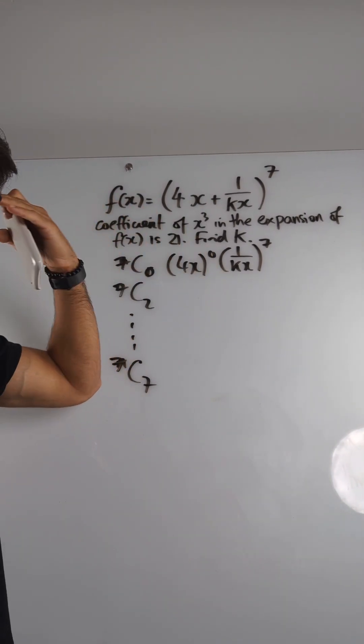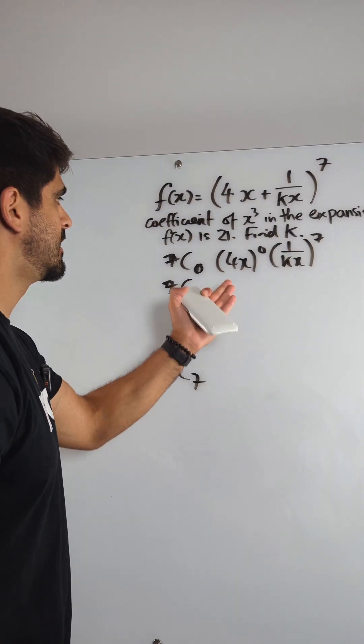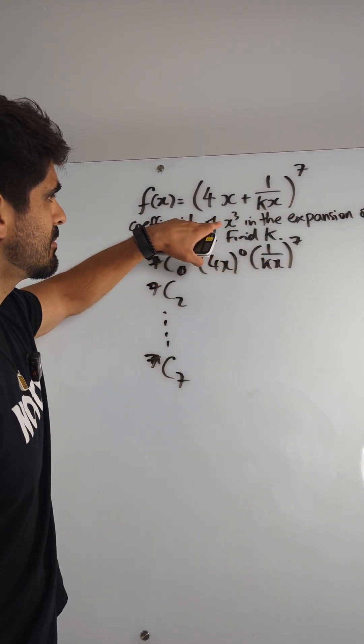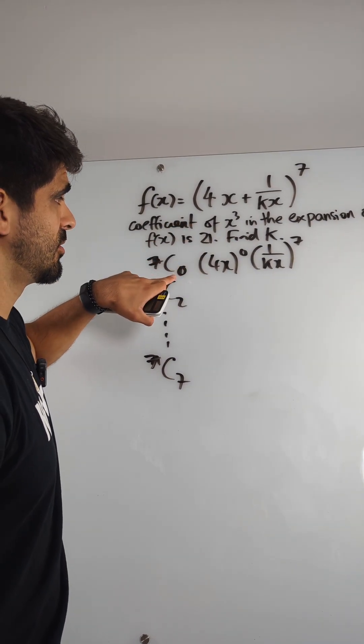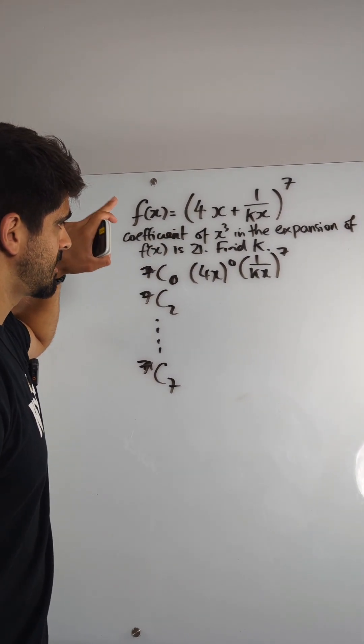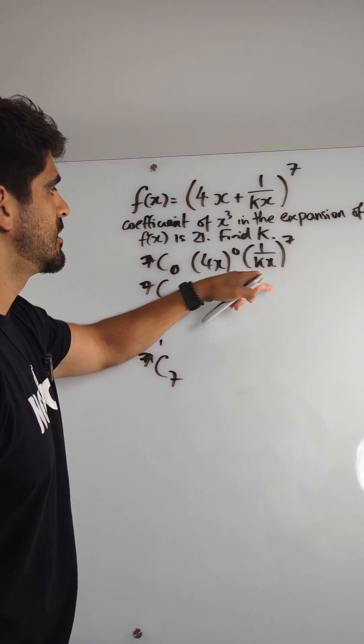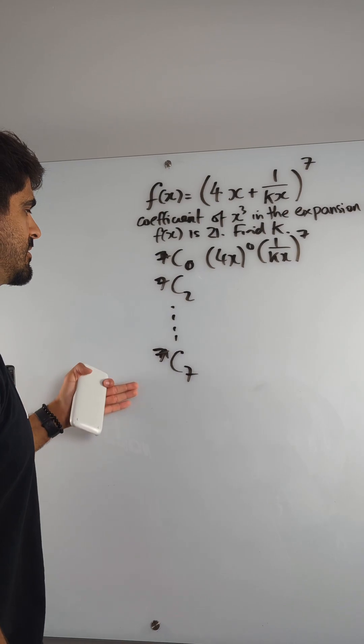You simplify in your head. That's just 1. This would give you x to the power of 7 in the denominator, but we want x cubed. So clearly, we want this term to have a higher power than this one. So my prediction is that it's going to be somewhere down here.